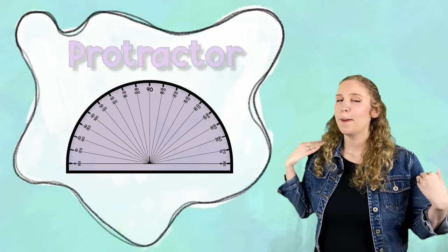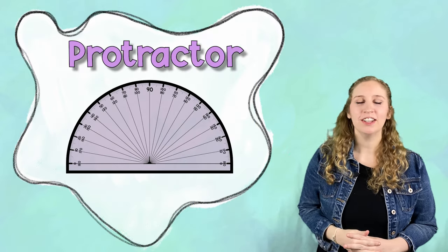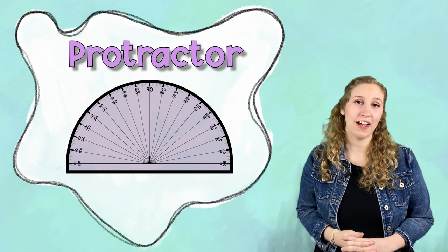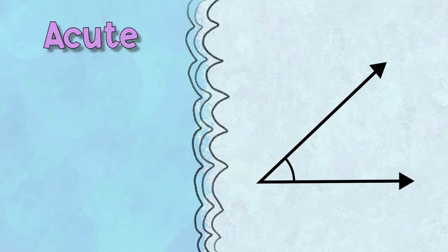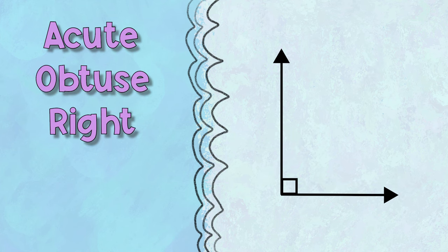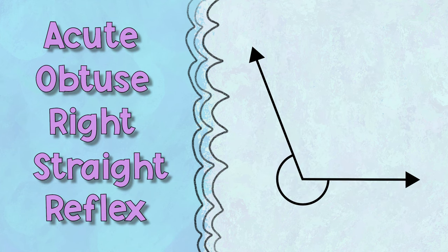When we talk about angles, we are going to measure with something called a protractor. Based on what those measurements are, you can classify angles into five different types. Those types are acute, obtuse, right, straight, and reflex angles.